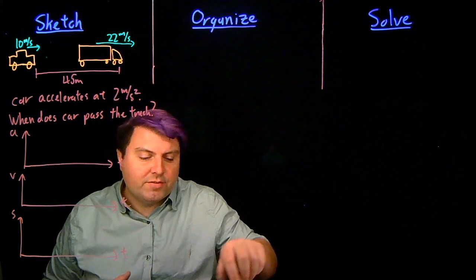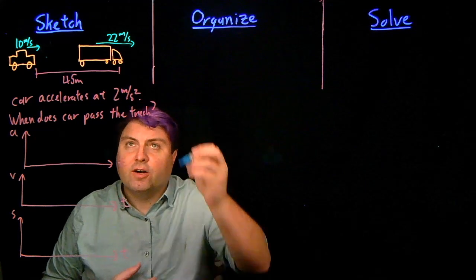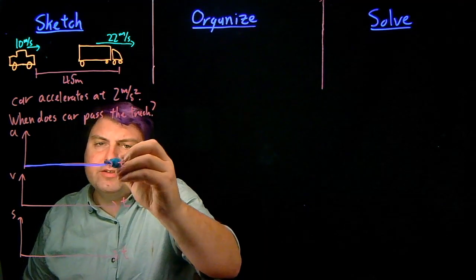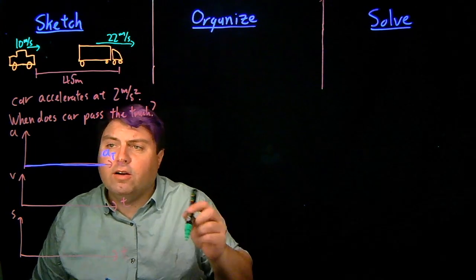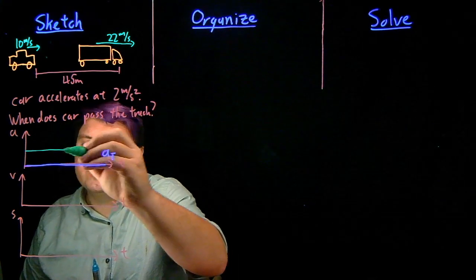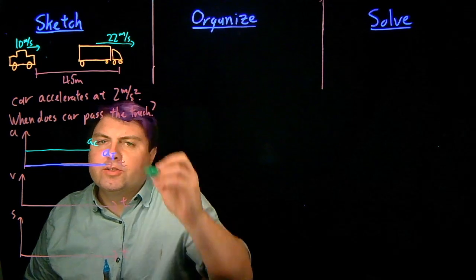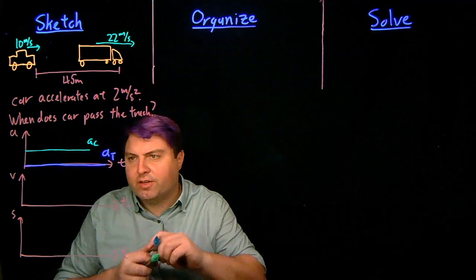So in these graphs, we can use two different colors. For our truck, it's got zero acceleration. So we can write this as the acceleration of the truck. For our car, though, it has a non-zero acceleration and a positive one. So we can draw a positive constant line and say that's the acceleration of the car.